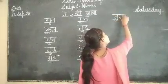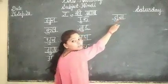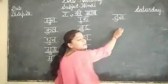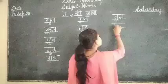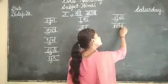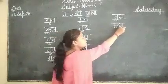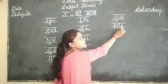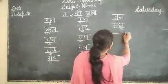आगे हैं ये — म, ध, उ — क्या बने हैं ये? म, ध, उ — मदू। क्या है? म, ध, उ — मदू। आगे हैं ये।